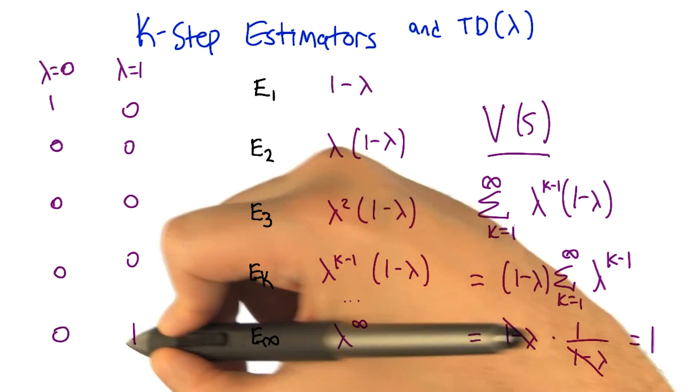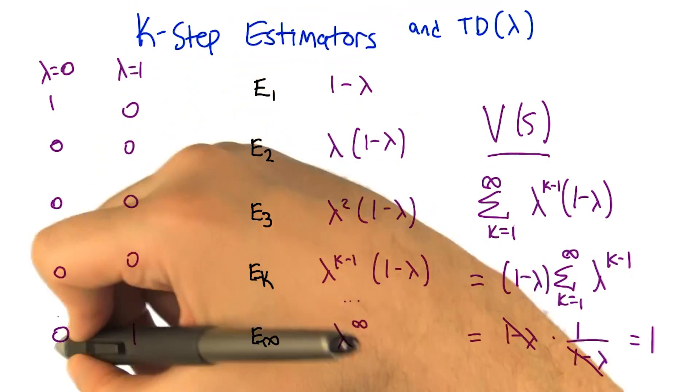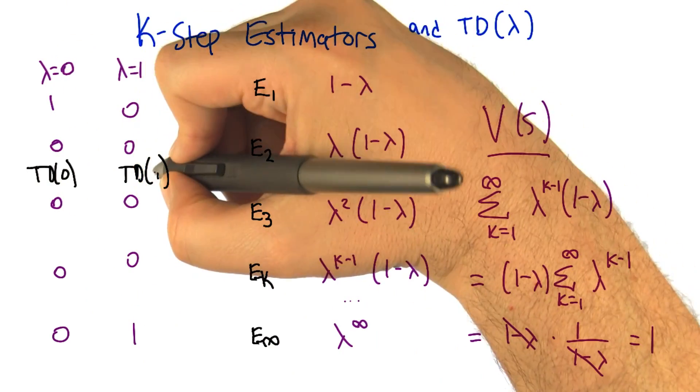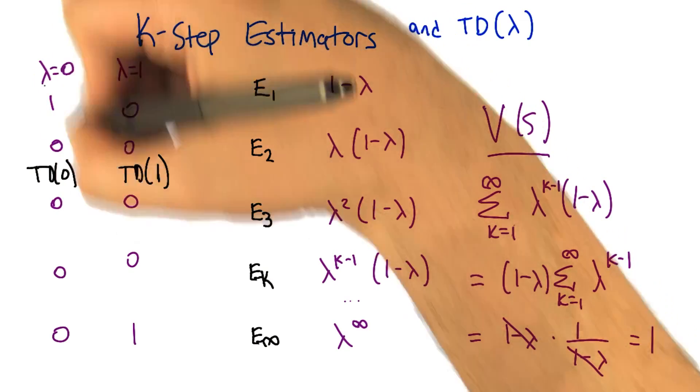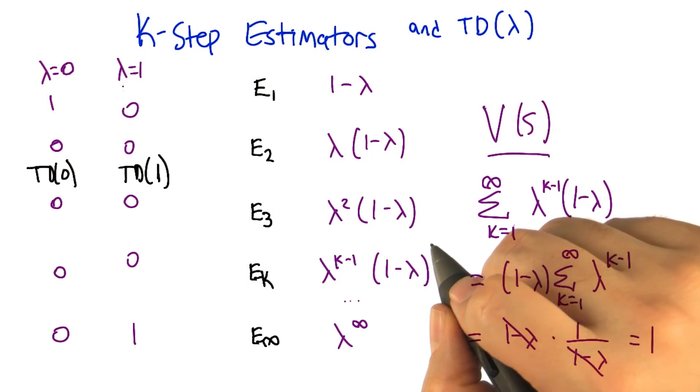Which, at least in the limit, would be one. So this is actually, as we said, this is giving us TD zero, and this is giving us TD one. So if we just use lambda in place of one and zero, which works, then we get TD lambda.